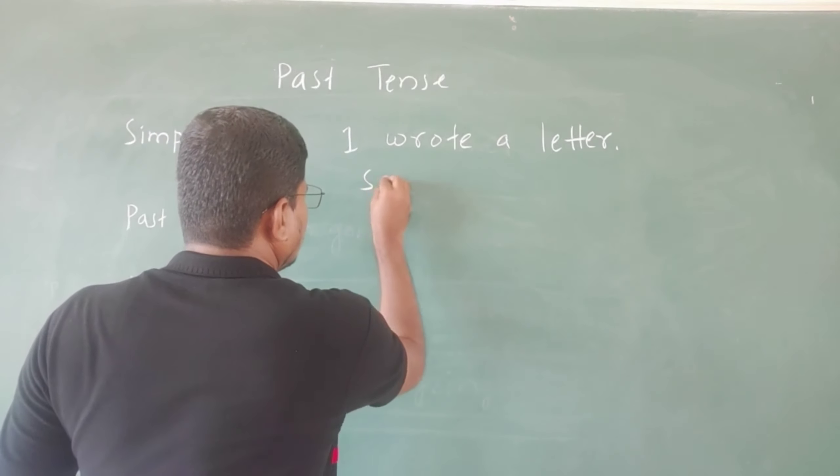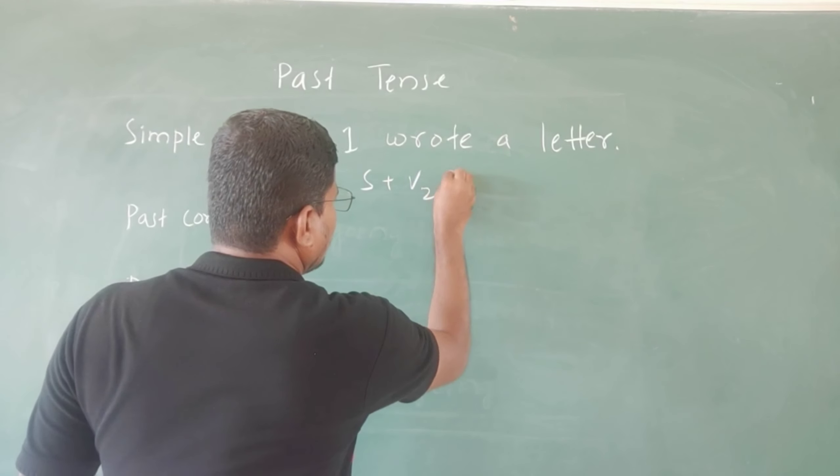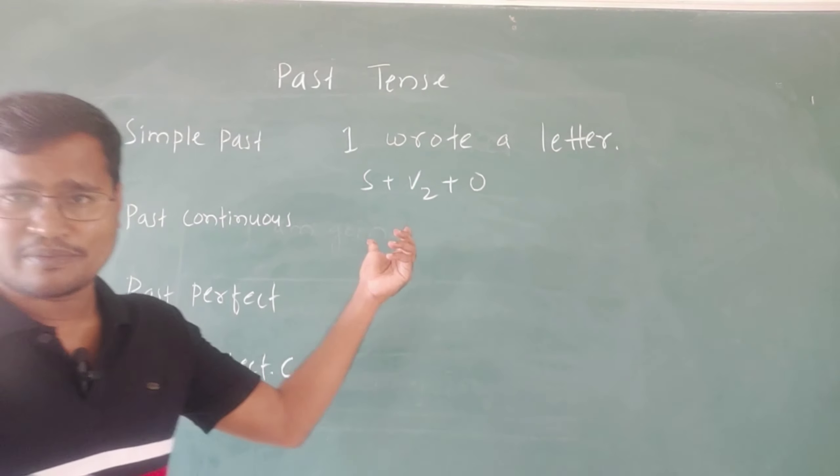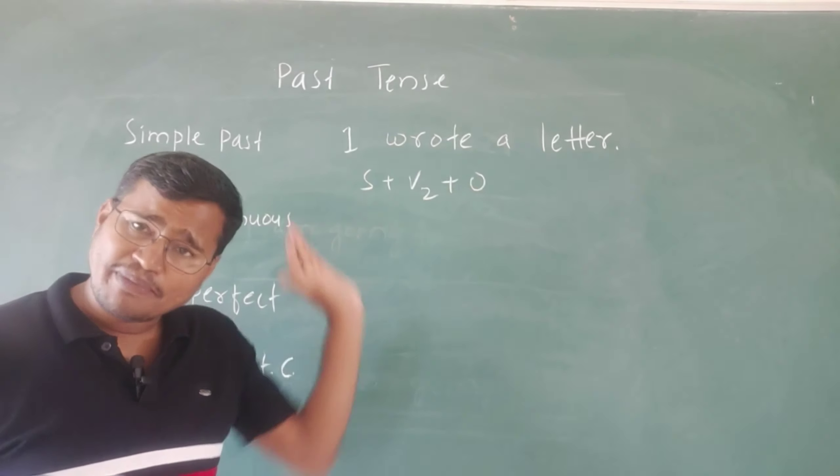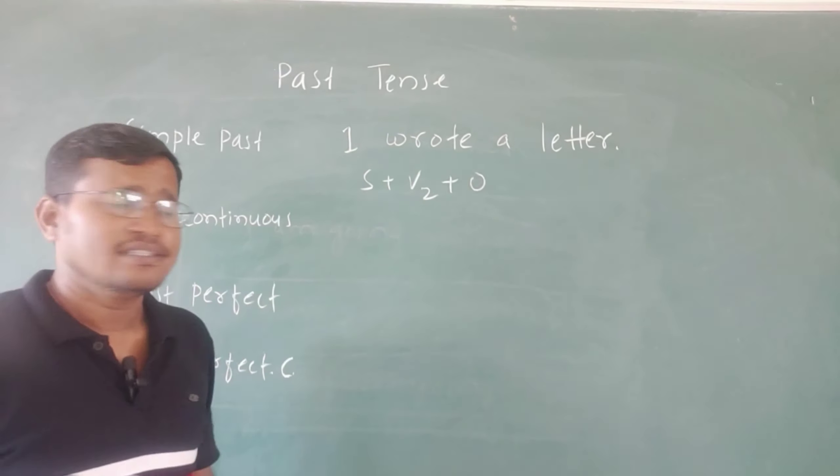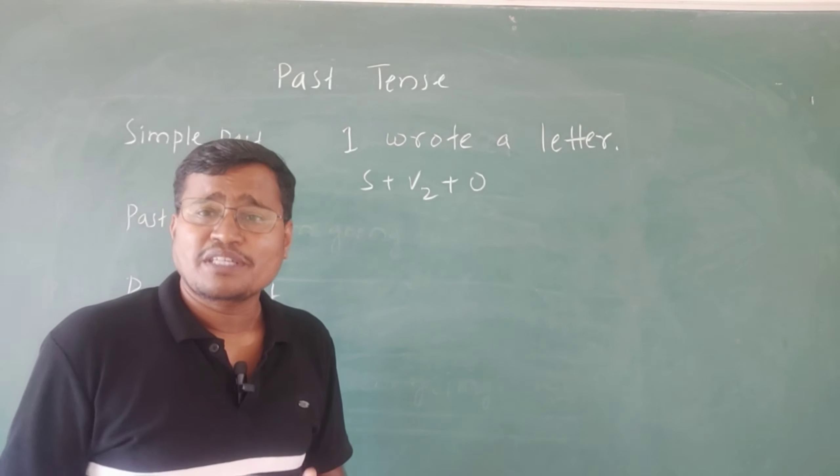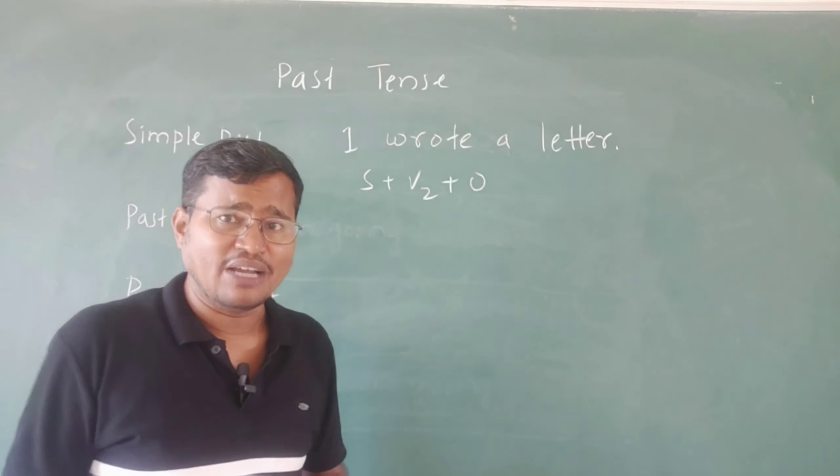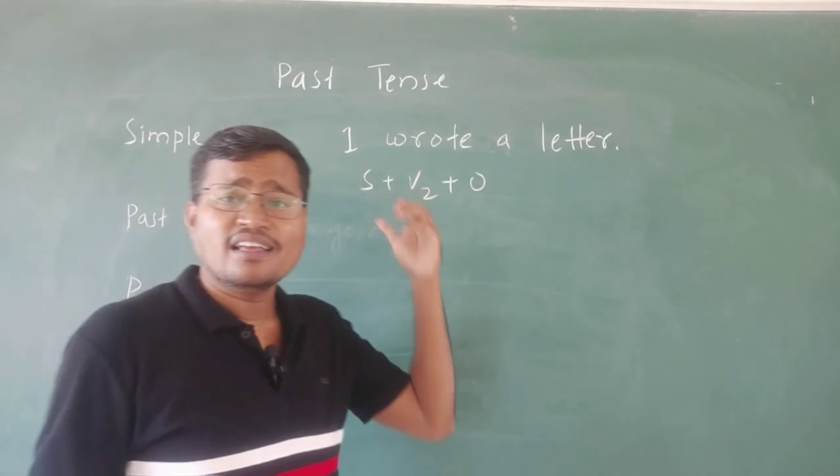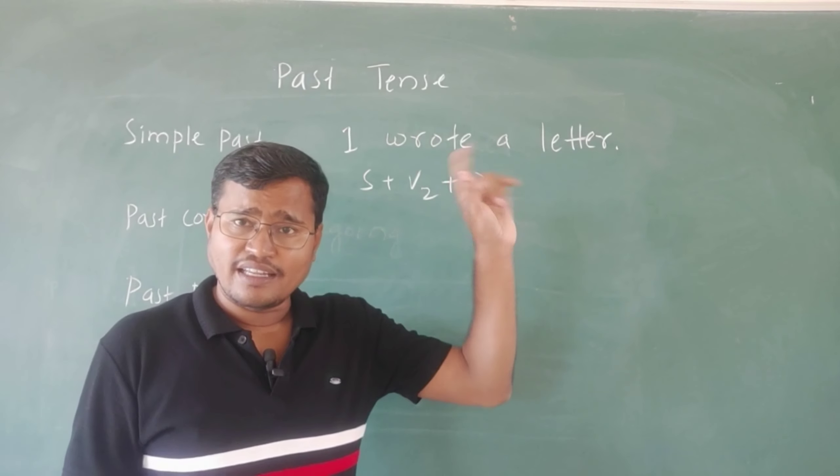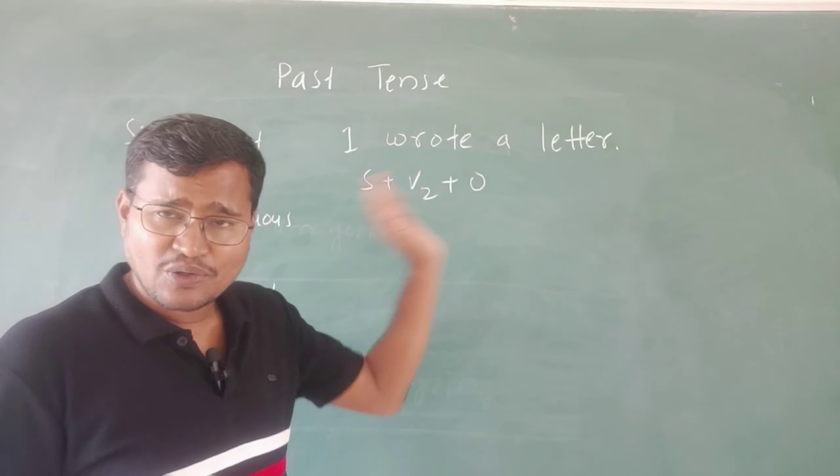The formula is subject plus V2 plus object. Now, simple present for that is 'I write a letter' - subject plus V1 plus object. In simple present, 'I write a letter', and in simple past, 'I wrote a letter'.